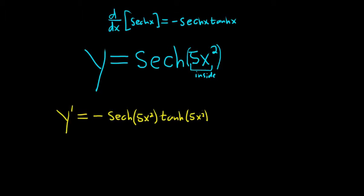And that's the chain rule. So 2 times 5 is 10x. That's where the 10x comes from. You take the derivative of the hyperbolic secant, which gives you negative hyperbolic secant, hyperbolic tangent. Then you multiply by the derivative of the inside, which is 10x.